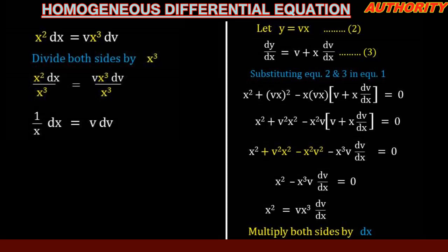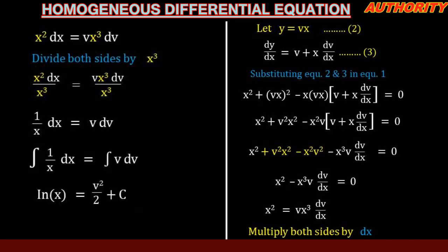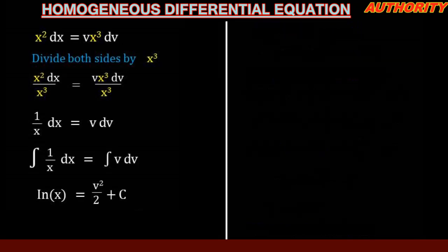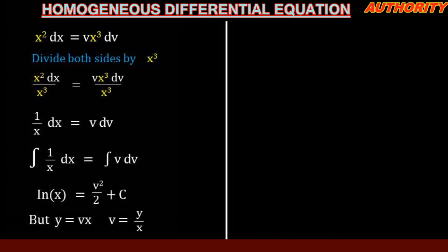Now we integrate both sides. The integral of 1/x dx equals the integral of v dv. The left side gives ln x and the right side gives v squared over 2 plus c. We recall that y equals vx, so making v the subject: v equals y over x.